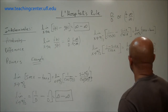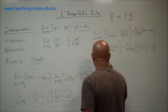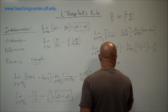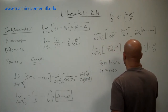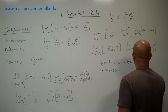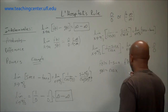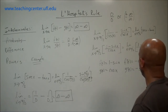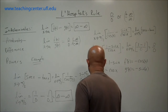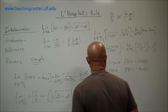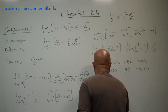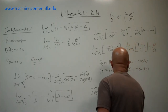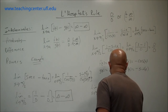Now that we have 0 over 0, let's apply L'Hôpital's rule. We set f(x) equal to 1 minus sine x, and g(x) equal to cosine x. The derivative of f is minus cosine x, and the derivative of g is minus sine x. So we can rewrite our limit as x approaches π/2 from the left as the derivative of f over the derivative of g, which gives minus cosine x over minus sine x.